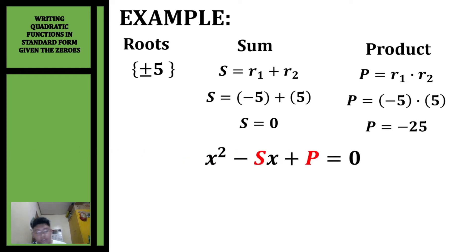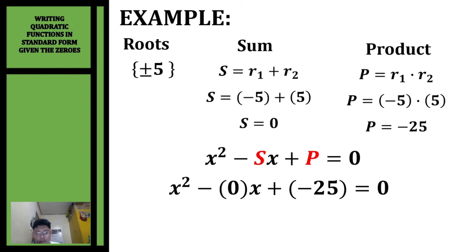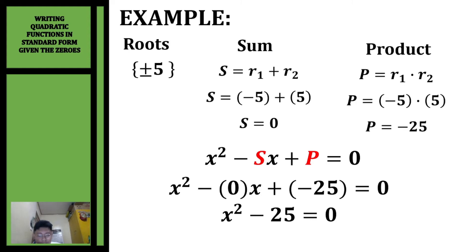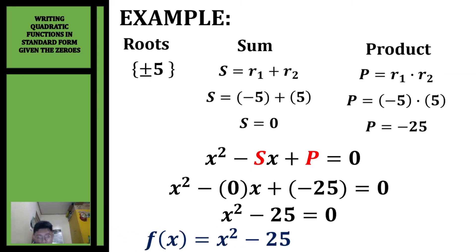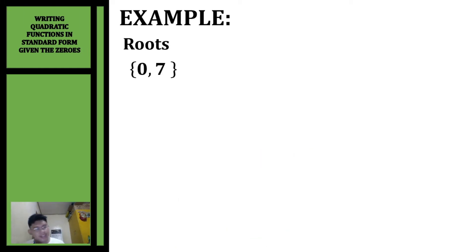Substituting, we have x squared minus 0x plus negative 25 equals zero. Simplifying, we get x squared minus 25 equals zero. Converting to a function, we change 0 to function notation: f(x) = x² - 25.